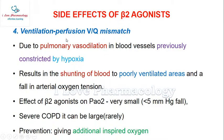Ventilation-perfusion mismatch occurs mainly due to pulmonary vasodilation in blood vessels that were previously constricted by hypoxia. Beta-2 receptor stimulation causes these previously vasoconstricted vessels to vasodilate, resulting in shunting of blood to poorly ventilated areas and a consequent fall in arterial oxygen tension.